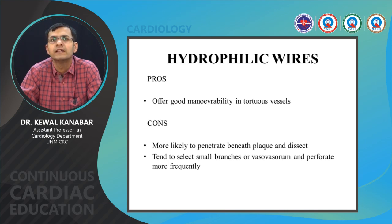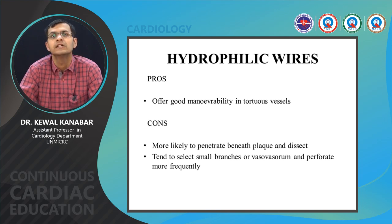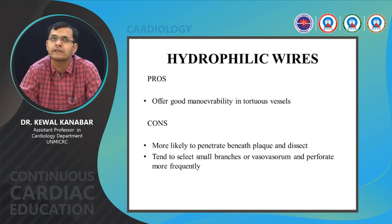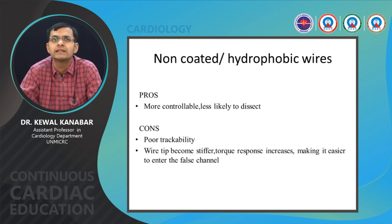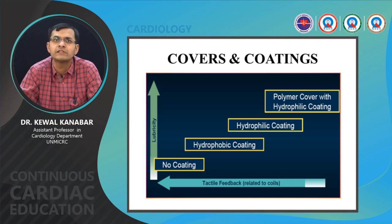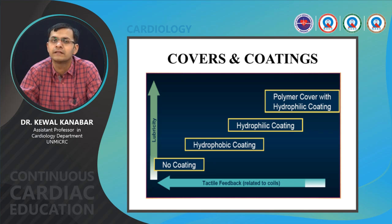A large majority of wires we use are hydrophilic wires. The advantage is better crossing ability; the disadvantage is higher risk of dissecting vessels and perforating distal vessels. Hydrophobic wires have better tactile feedback, are more controllable, and less likely to dissect or perforate, but their crossing ability and trackability is poor. As we go from a non-coated wire to hydrophobic to hydrophilic to polymer-coated with hydrophilic coating, lubricity increases but tactile feedback reduces.